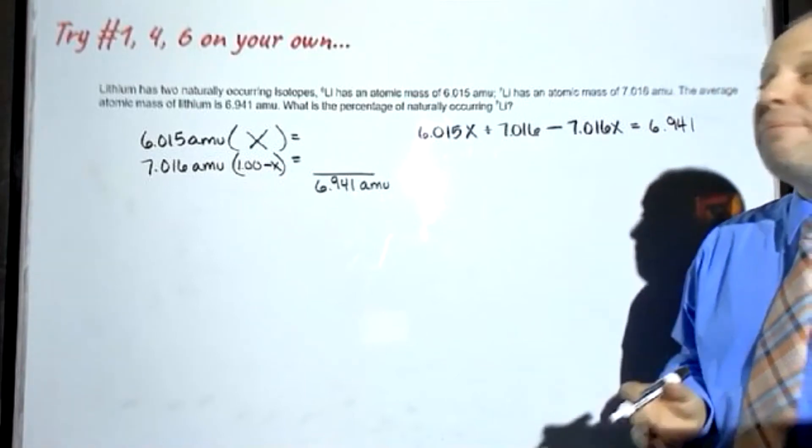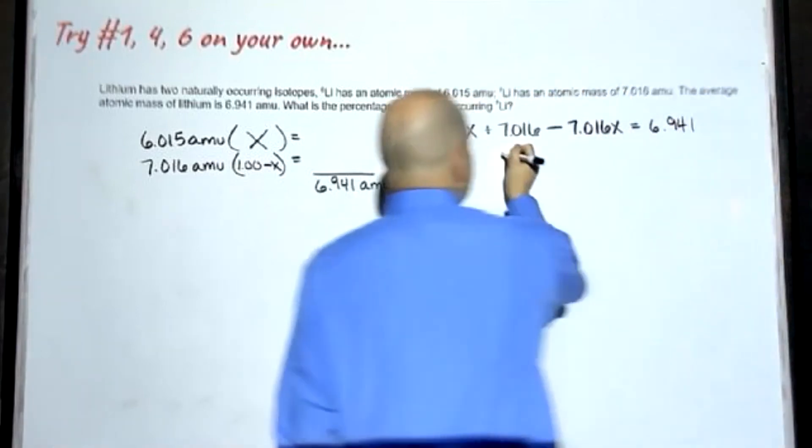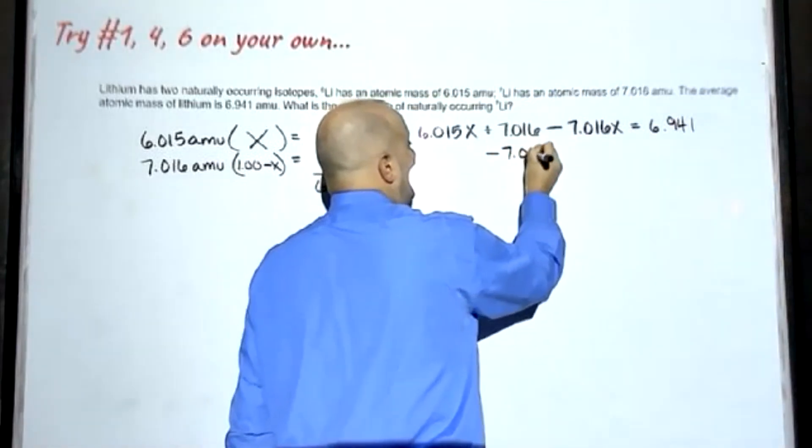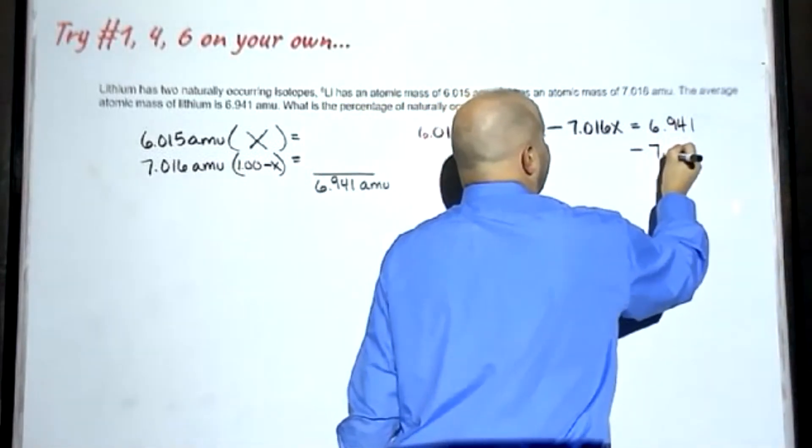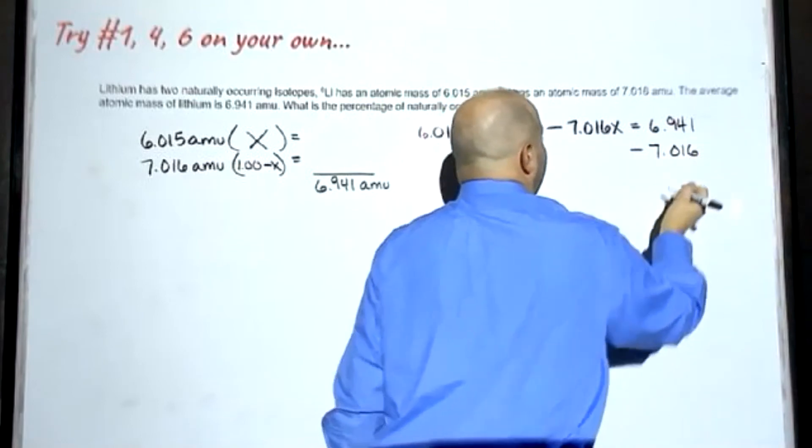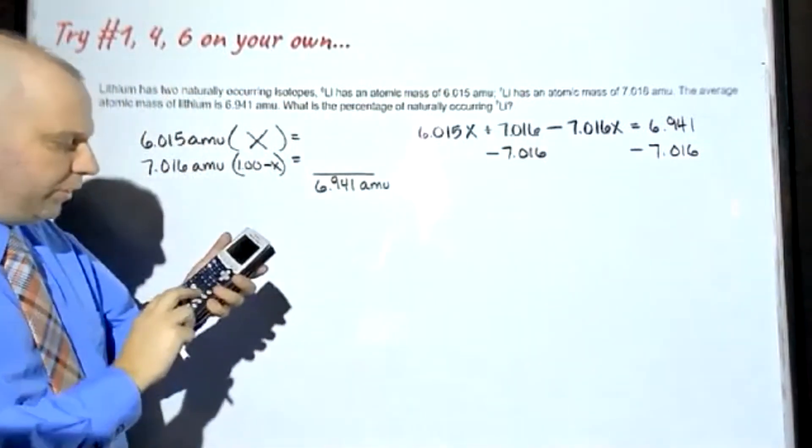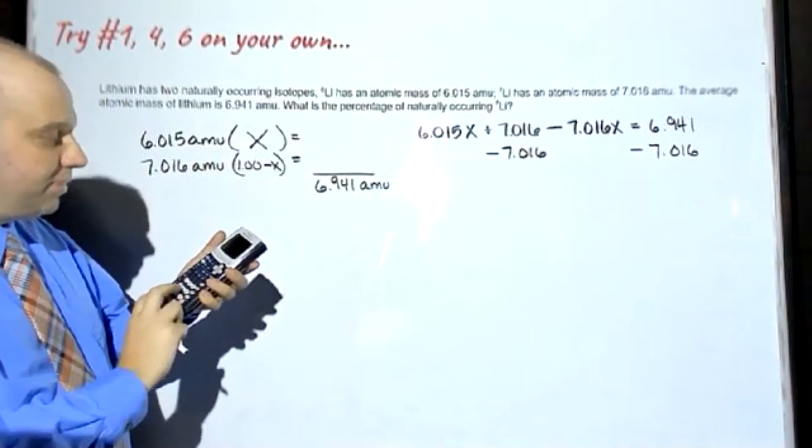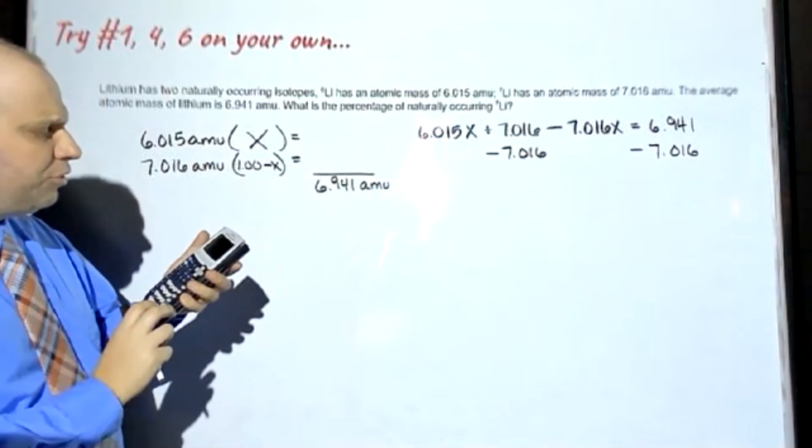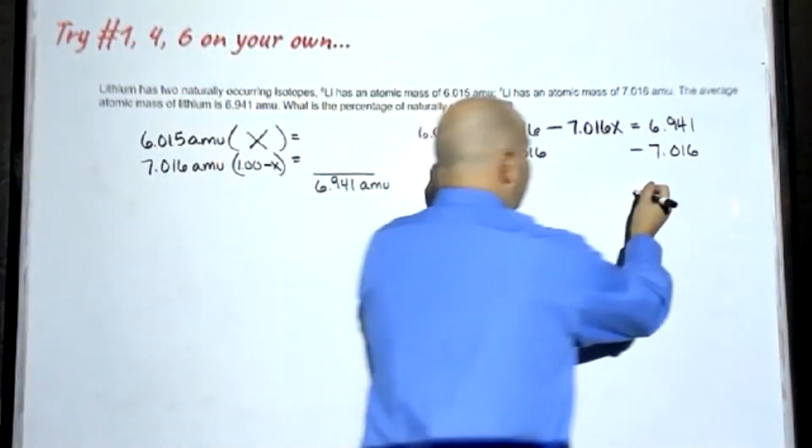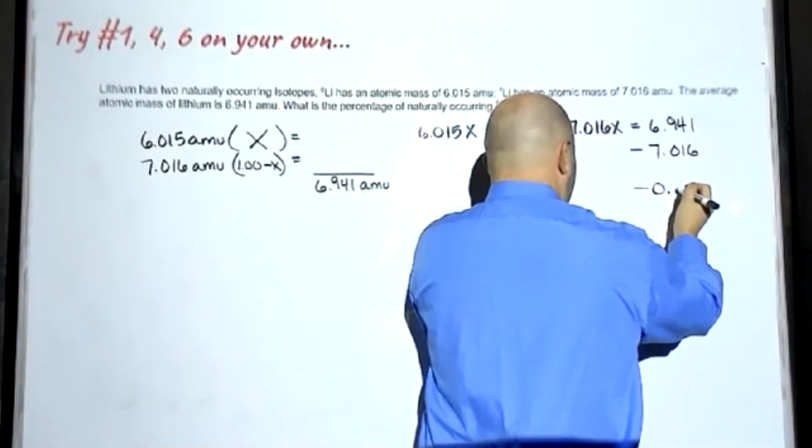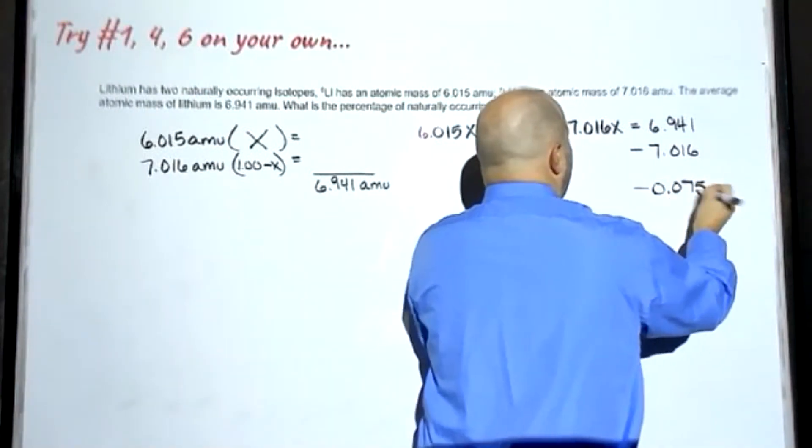The next piece is to combine like terms. So I'm going to subtract my 7.016 from both sides of the equation. So 6.941 minus 7.016 turns out to be negative 0.075.